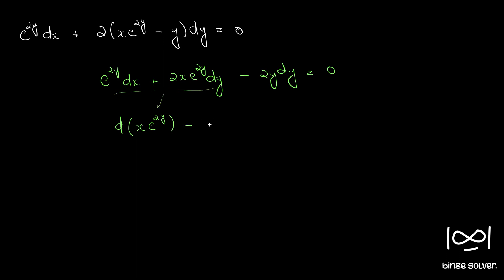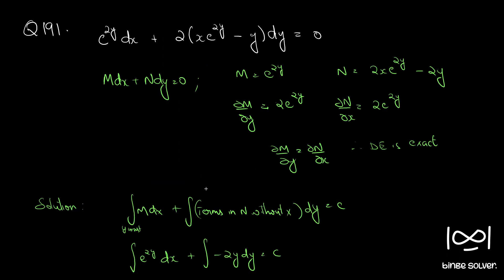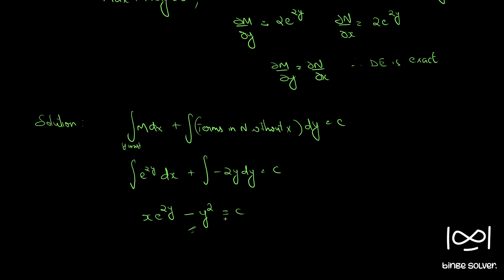And minus 2y dy can be written as d of y squared, and 0 is nothing but d of a constant. So integrating, we get x e raised to 2y minus y squared is equal to c. This is the same answer we got in the previous method.